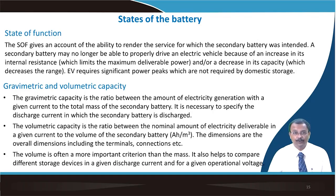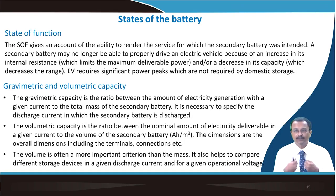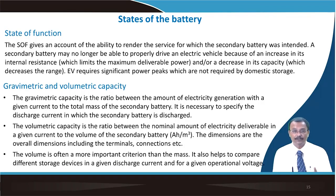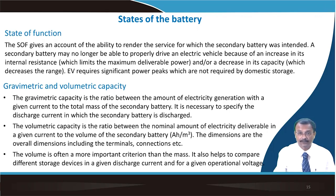Gravimetric capacity is the ratio of electricity generated at a given current to the total mass of the secondary battery — it is necessary to specify the discharge current since capacity depends on the drain current. Volumetric capacity is the ratio of nominal electricity delivered at a given current to the volume of the secondary battery, typically expressed in charge per cubic meter. Volume is a more important criterion than mass for mobile applications since the battery must fit in a fixed space, making volumetric energy density a very important criterion.